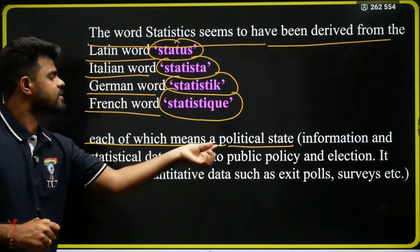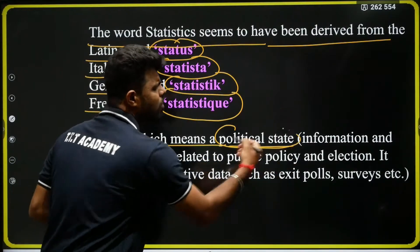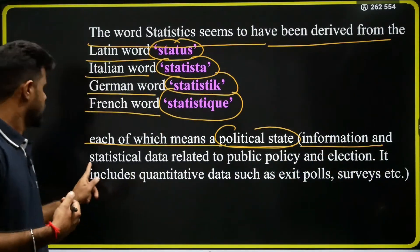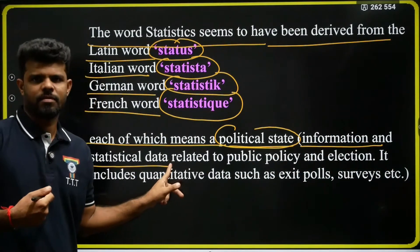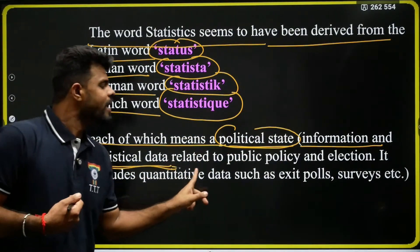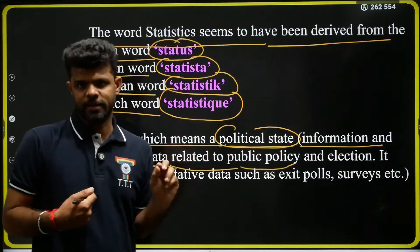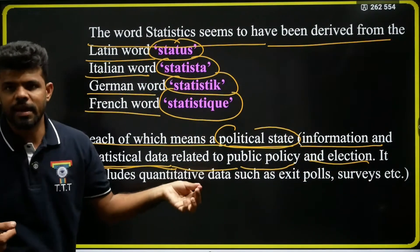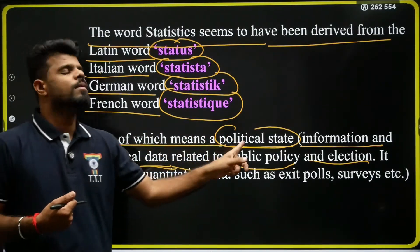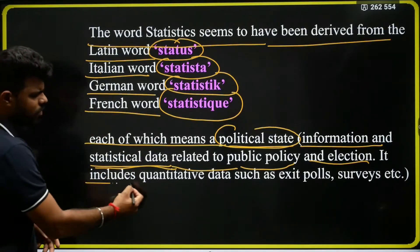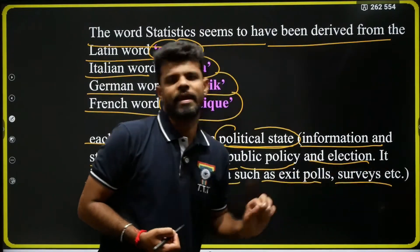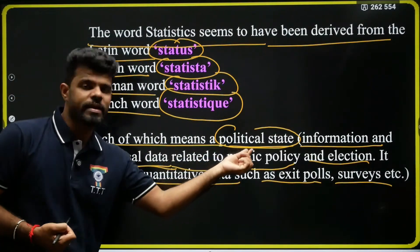Political state means information and statistical data related to the state. It refers to election-related data and election-related information. It includes quantitative data such as exit polls and surveys. That is the meaning of political state.